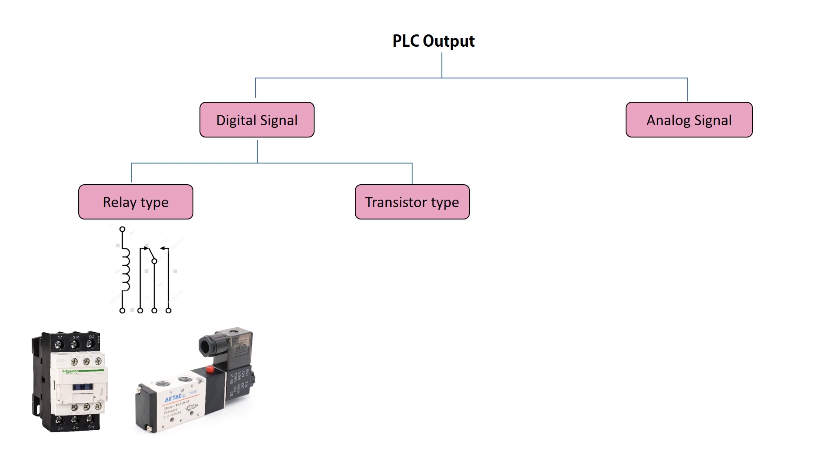Transistor type outputs, on the other hand, are typically used for switching DC loads. Like traditional transistors, these come in two types, NPN or PNP. Examples of transistor type outputs include driving small DC motors and controlling lights.